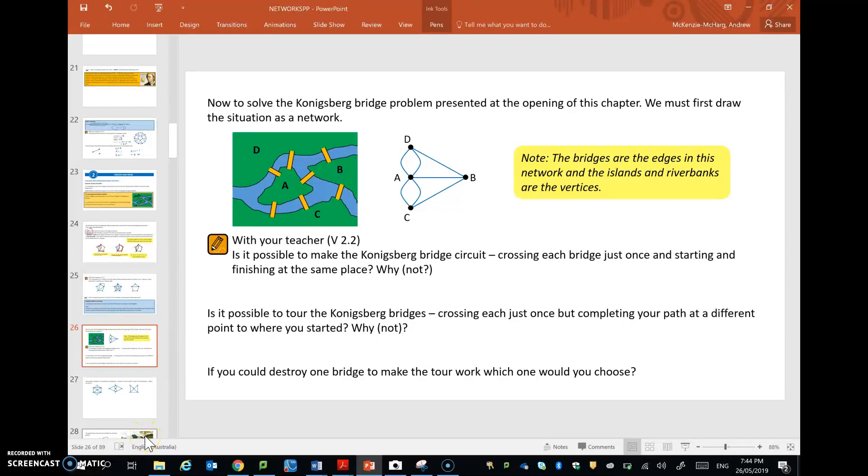Okay, general math students, so earlier we looked at the Konigsberg bridge problem, and you probably got sick of trying to find a way to do this, because the answer is that no, it's not possible to tour each bridge once and only once and ending up back where you started. That's, of course, what we would call an Eulerian circuit.